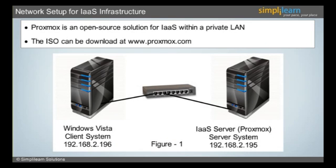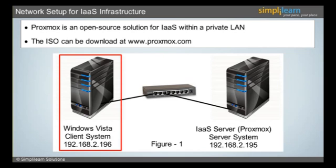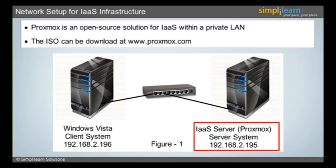In this example, Figure 1 on the slide shows a lab setup with two systems. One is a server and the other is a client system. The client system is where the users will be accessing the services from the IaaS server. The server system is installed with Proxmox, and the IP address for this system in this example is 192.168.2.195. It is essential to know the IP address of the server system, as the web portal can be accessed only by using the IP address through the client system.